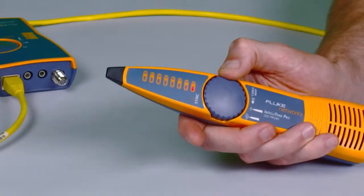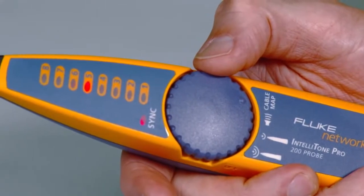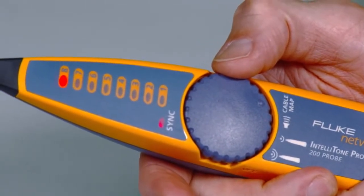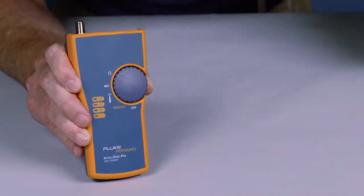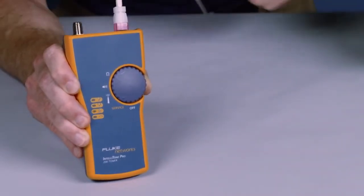The toner and probe feature a thumb wheel ergonomic design and status indicators give easy-to-read feedback. The mystery of identifying cable services becomes history. Know if it's a data, telco, or dead jack instantly.